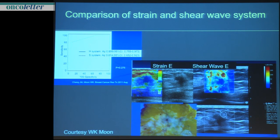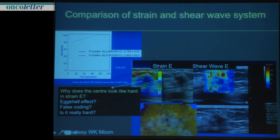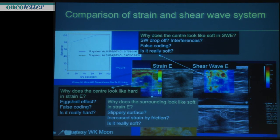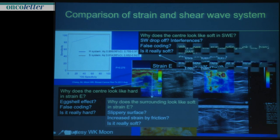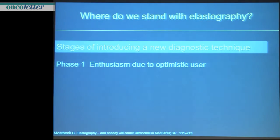This image from Moon, also an EFSEM lecturer, illustrates problems we still face. In the strain image, the center is hard and the surrounding tissue is soft. But looking at the same lesion with shear wave elastography, the center is soft and the surrounding is stiff. What is the definitive truth? There is a lot of work to do and you have to understand the technological basis for why this can happen. My theory is there are interferences in the center in the supersonic technique.